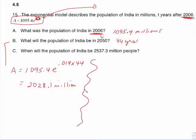Part C is going to require a little bit of solving. It says when will the population be 2,537 million? That means we're looking for t. We have 2,537.3 equal to 1,095.4 e to the 0.014 t.